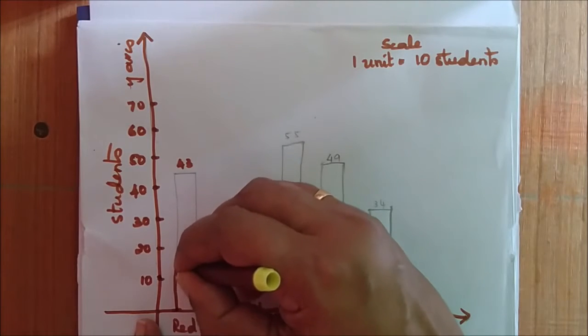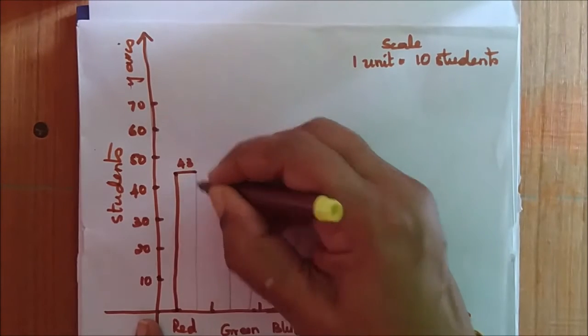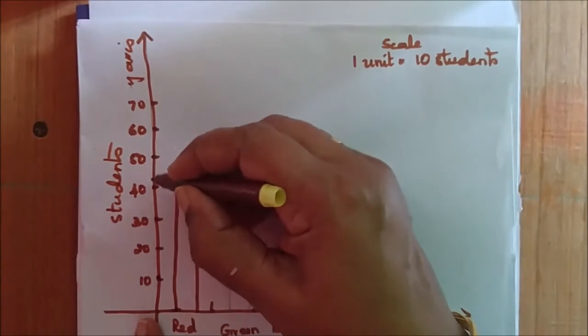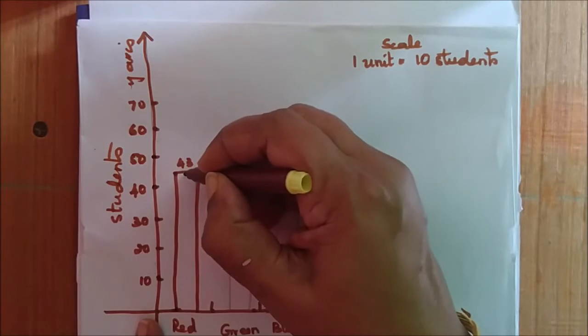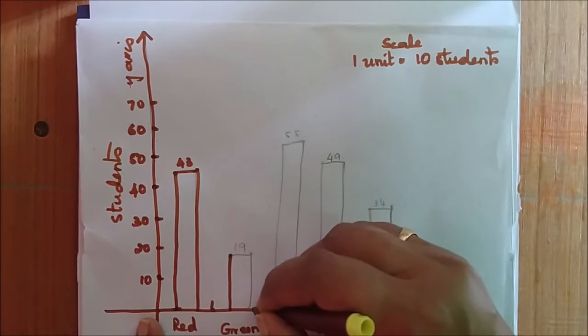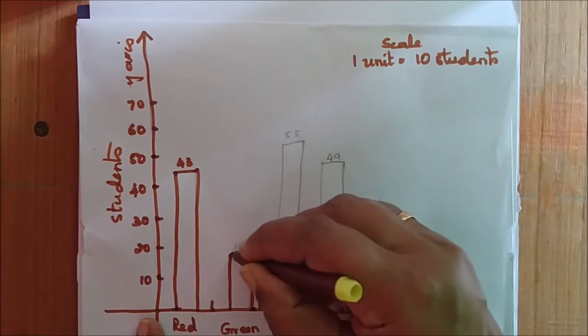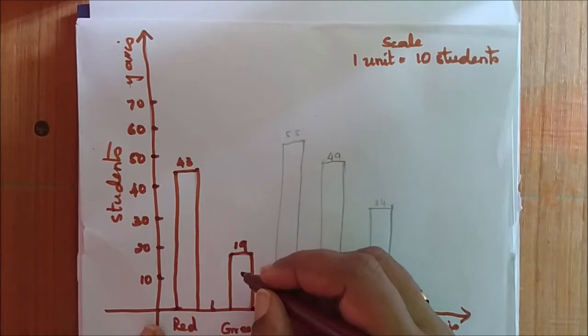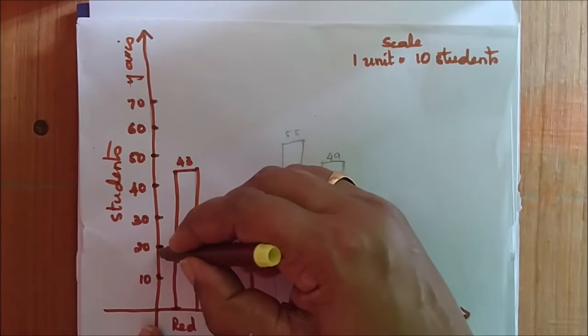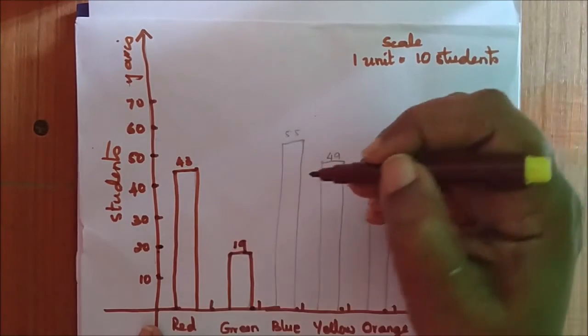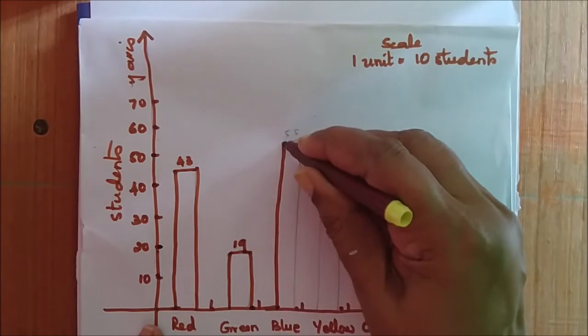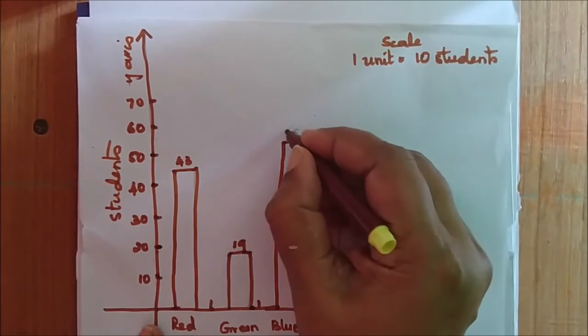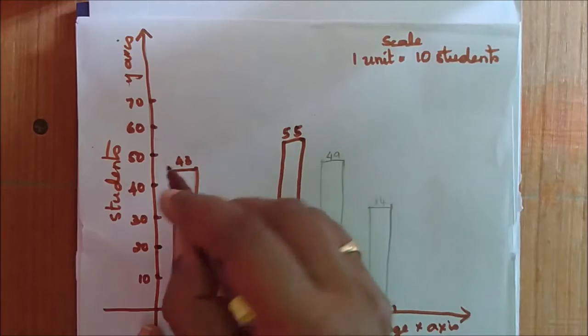First color is red. How many people like red color? 43 people like red color. So between 40 and 50 I mark 43. Similarly, let me take the green color. How many people like green color? 19 of them like green color. So I mark here below 20, a little below 20 I mark my 19. Now the next one is the blue color. How many students like blue color? 55 students like blue color.